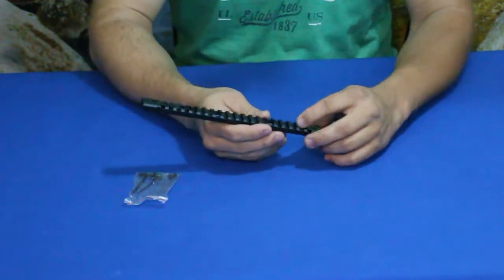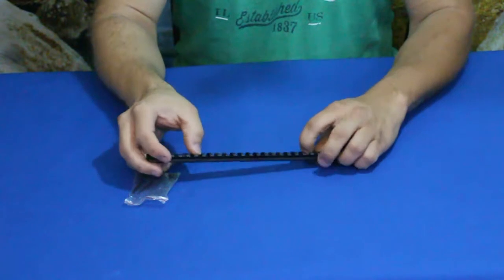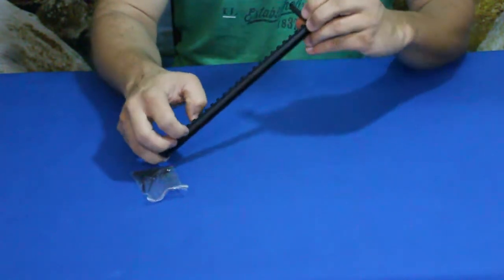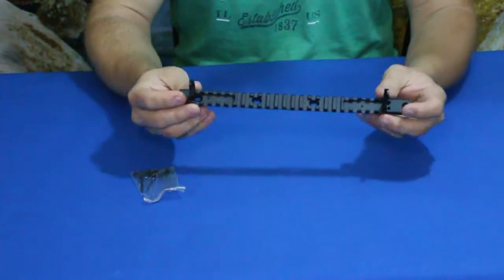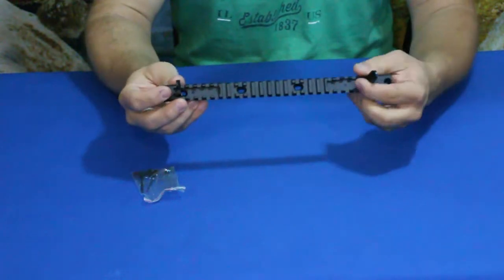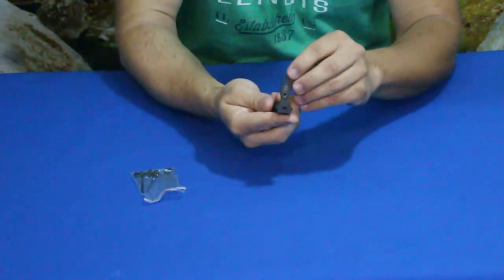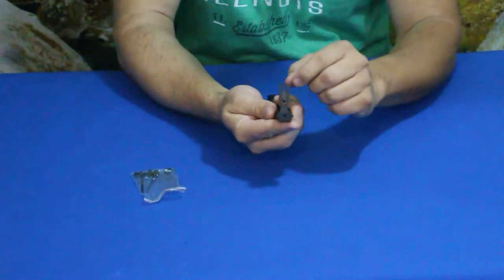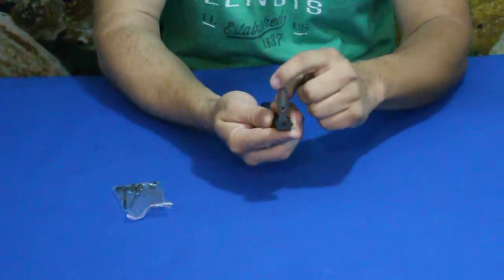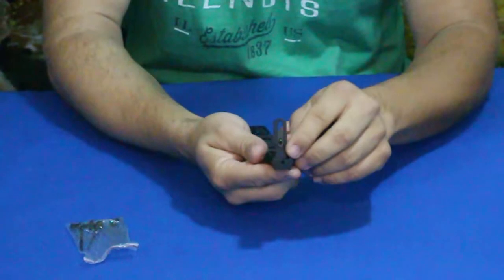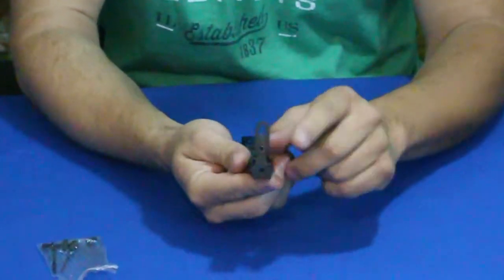Now this does have these flip-up iron sights and as you can see, we'll try and get a little bit of a close-up right here. It has kind of a pin surrounded right there, and of course that'll be nice to keep it protected from being damaged.